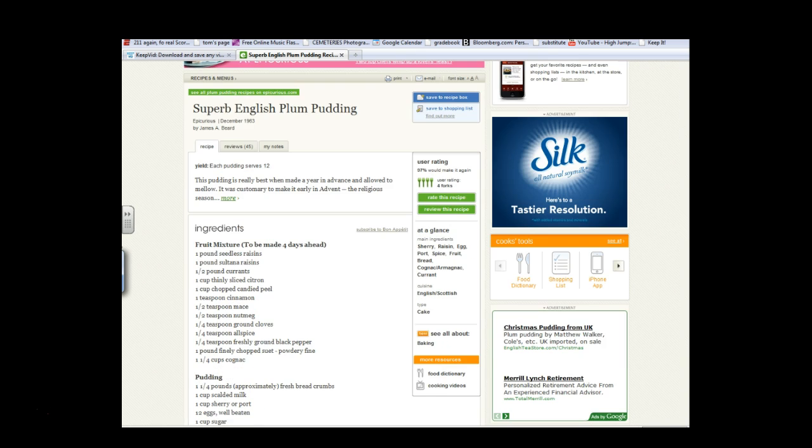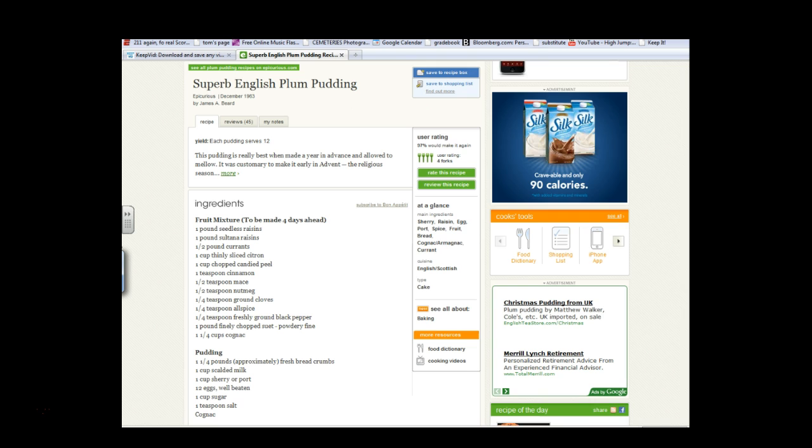This is sounding so good. One quarter teaspoon of ground cloves, a quarter teaspoon of allspice, whatever that is. Isn't that what you put on after you shave? One quarter teaspoon of freshly ground black pepper. This is sick. One pound finely chopped suet powder fine, whatever that is. And one in one cup, oh, I don't know if I can say that, but cognac. And that's just the fruit mixture.